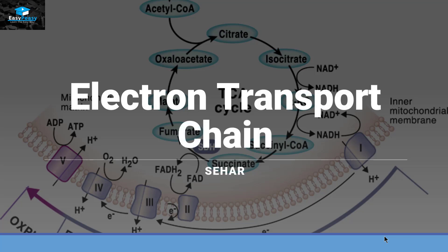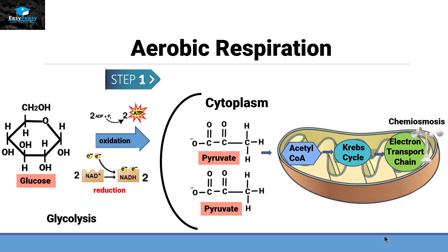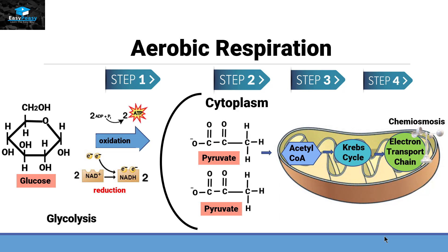Hello friends, this is Seher from EZPZ and the topic we are going to discuss today is called the electron transport chain. Electron transport chain is the fourth step of aerobic respiration. The first step is glycolysis, the second step is pyruvate oxidation, the third step is the Krebs cycle, and the fourth step is the electron transport chain. So let's discuss this step in more detail.